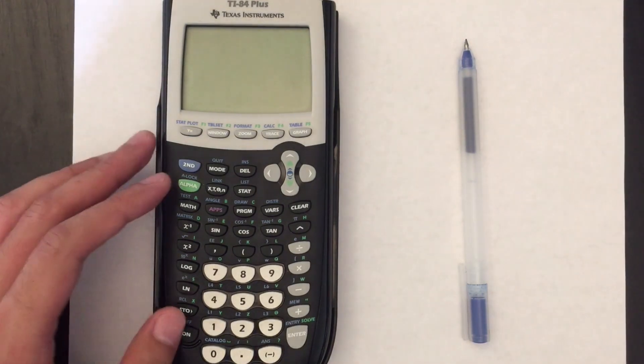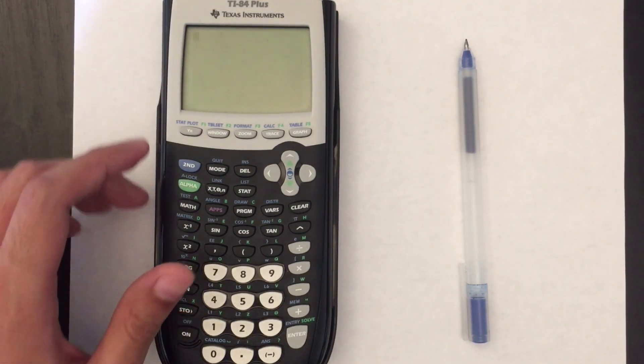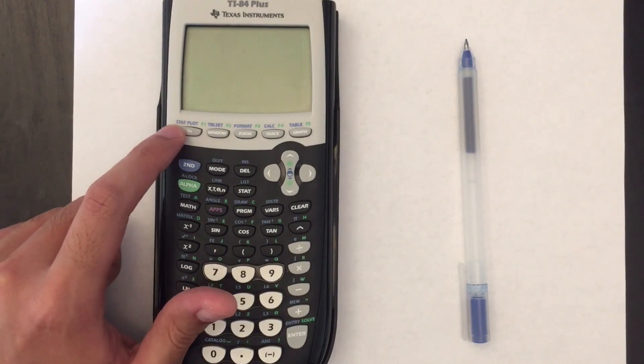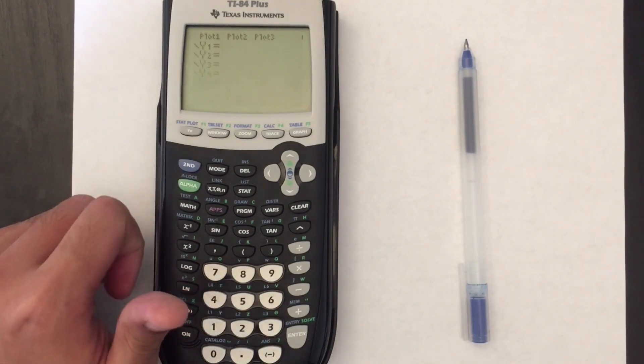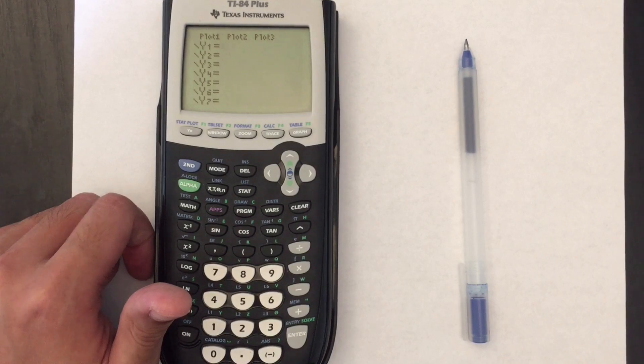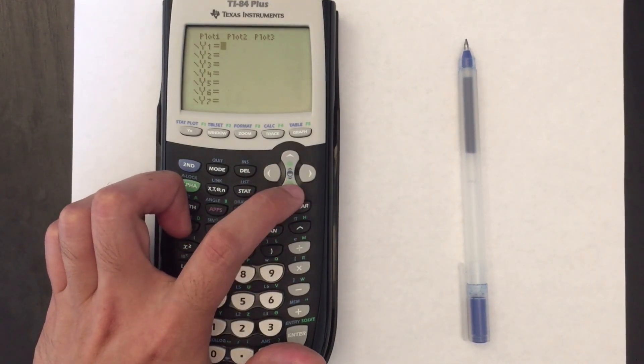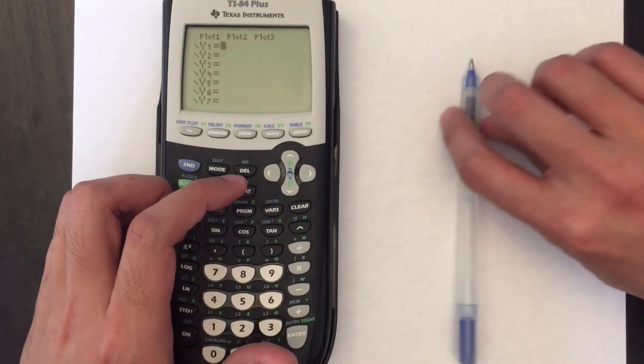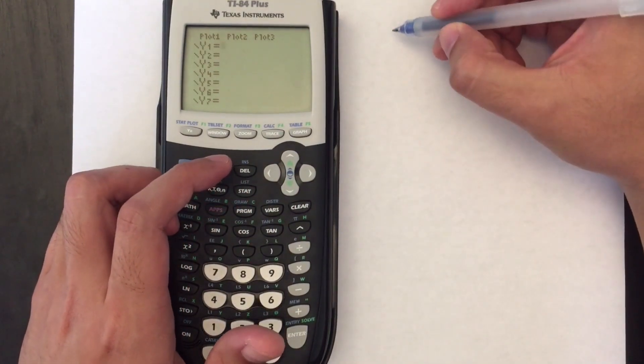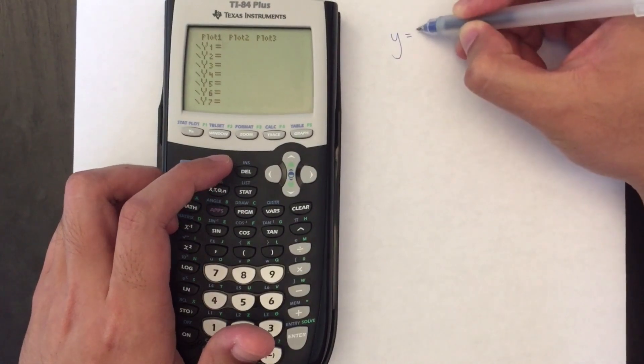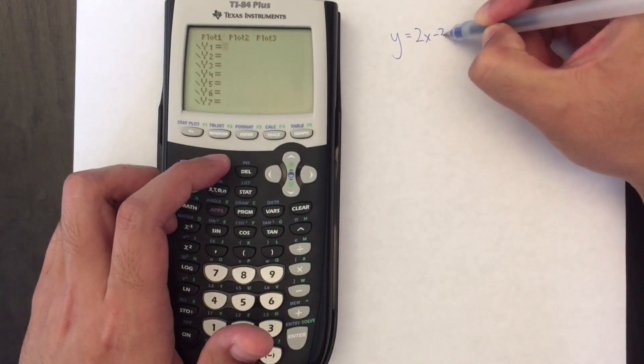So just to dive right in, to start graphing functions what you're going to do is hit this y equals button in the top left and this will bring up a lot of blank functions that you can use for your function graphs. So let's say that the first function that we want to graph is a simple line y equals 2x minus 3.